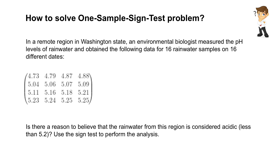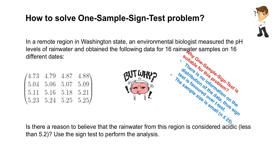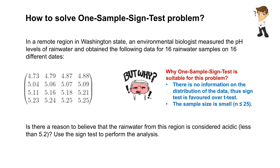Before I go any further, let me explain why we have to use a one sample sign test to solve this problem. There is no information given on the distribution of the data, whether it's normal or not normal. So apparently, we can't use parametric tests that always assume normal distribution. Another reason is that the sample size given here is considered small, which is only 16. These two reasons are why one sample sign test is suitable to solve this problem.